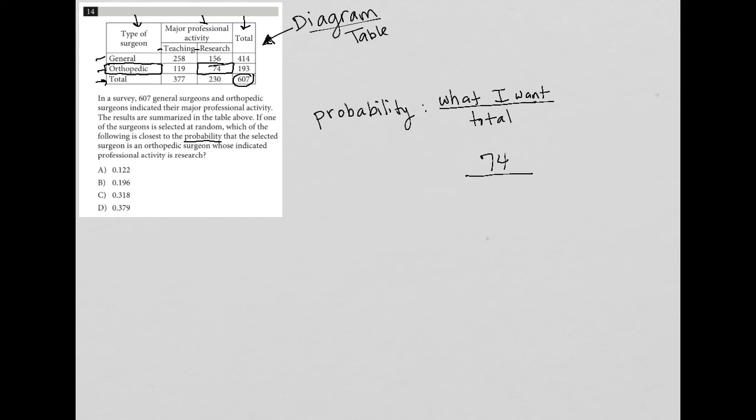Now, the total, how many surgeons are we choosing from? Well, if one of the surgeons is selected at random, we're choosing from all available surgeons, and that is the 607 number. So we're choosing from the total pool of surgeons, which is 607, and we're hoping to get one of them that is orthopedic and focuses on research. So here's our probability.